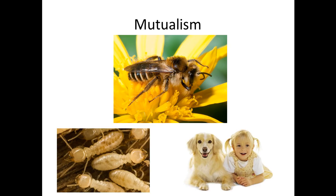The second type of interaction in a community is mutualism, which means both species benefit from the relationship. For example, the bee and the flower — the bee gets its pollen as food, and the flower gets pollinated so fertilization and seed production can take place.